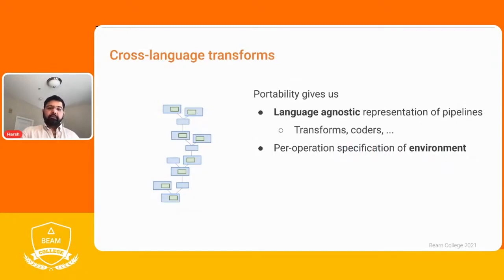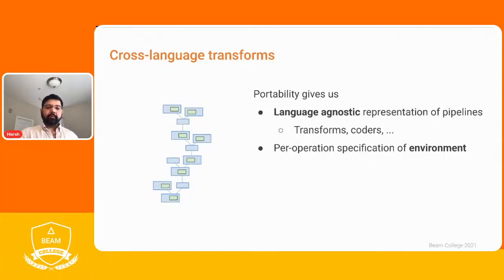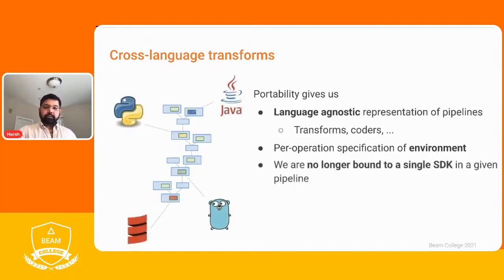Portability also gives us the ability to do cross-language transforms. Because portability gives us a language-agnostic representation of pipelines — including coders, transforms, and so on — we can now specify per-operation the environment. Instead of doing it at the pipeline level, we can do it on a per-operation or per-transform level. So your GroupByKey can be executed in Python, your first ParDo in Java, and your second ParDo in Go. This means we are no longer bound to a single SDK in a given pipeline — we can use different SDKs or languages in the same pipeline by specifying what environments they need. Since portability is language-agnostic and runners are language-agnostic, runners see this as a single pipeline and can execute these transparently.